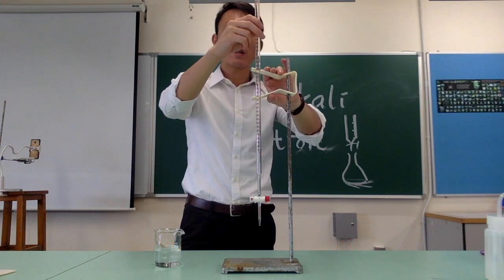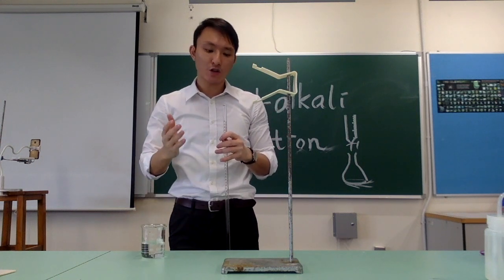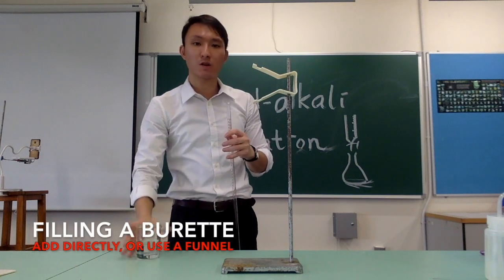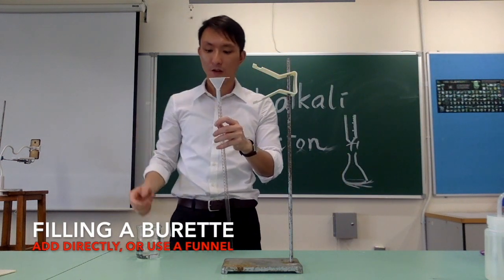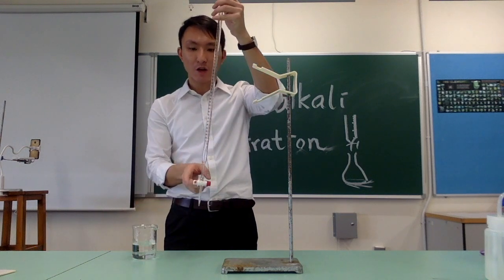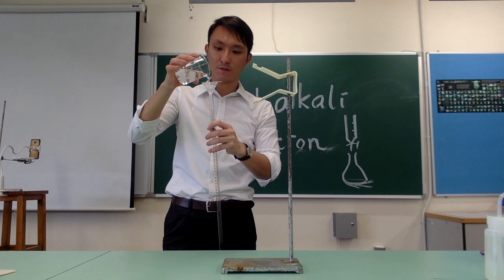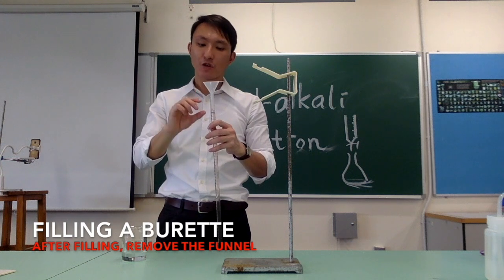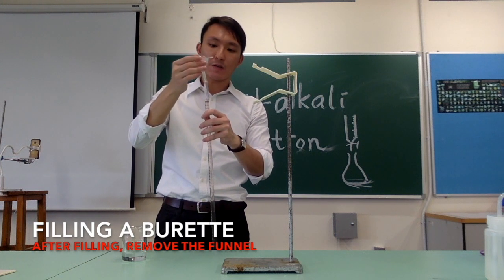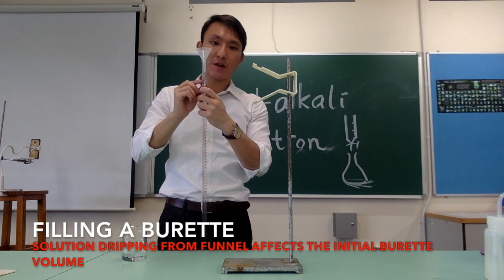To add the solution to the burette, you can pour it in directly or use a funnel at the top if you are not confident. Make sure the valve is closed when adding. After adding the solution, remove the funnel immediately, because if you leave it there, liquid will drip down and affect the volume reading on the scale.